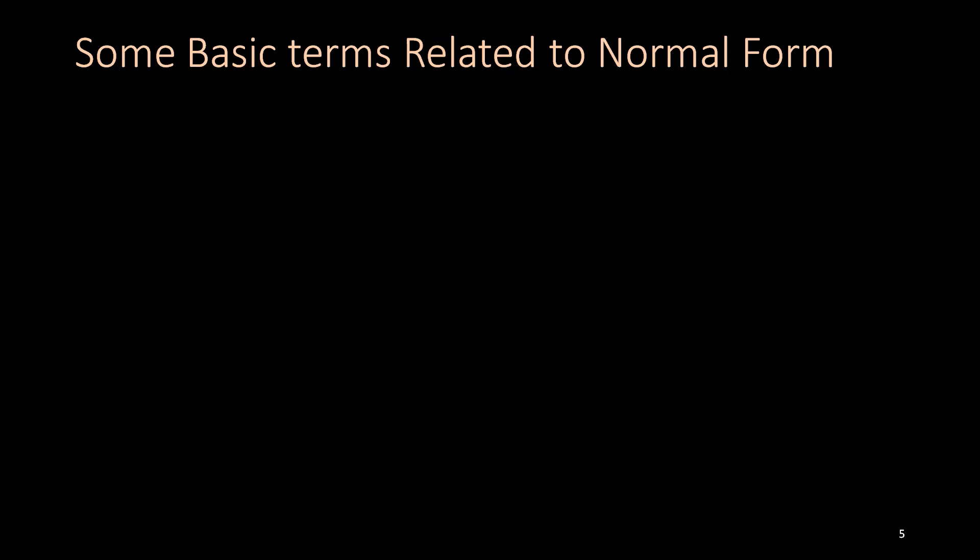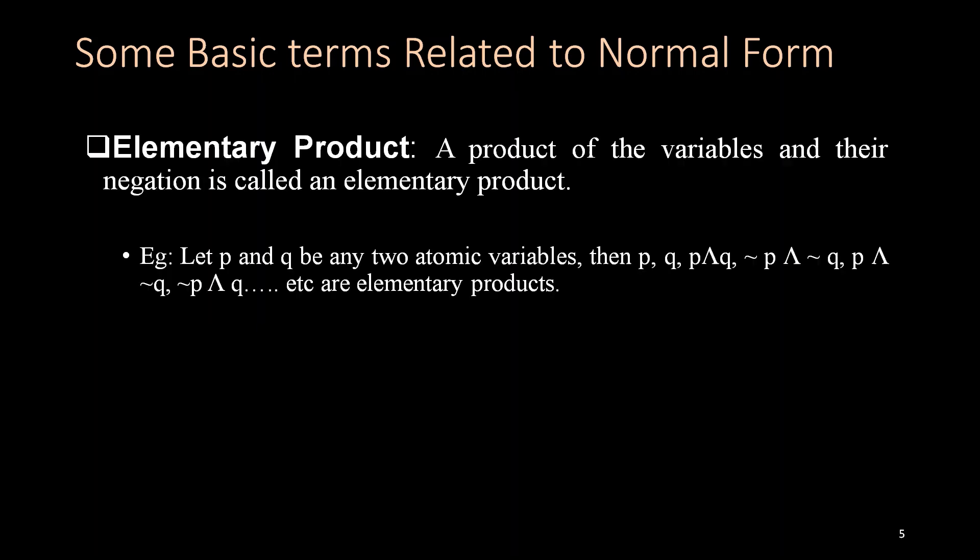Some basic terms related to Normal Form. Elementary Product: a product of the variables and their negation is called an elementary product. Negation means complement or you can say invert. For example, I am saying it is raining. Negation means it is not raining. The product of a variable and its negation is called elementary product.